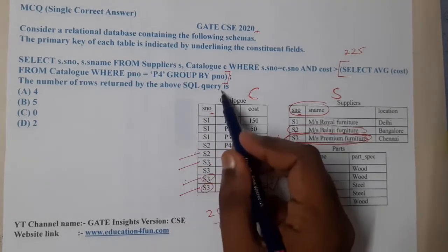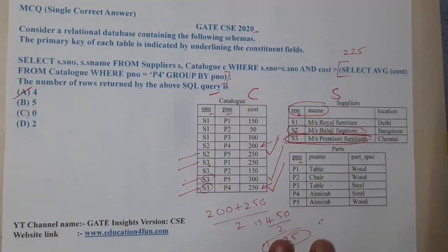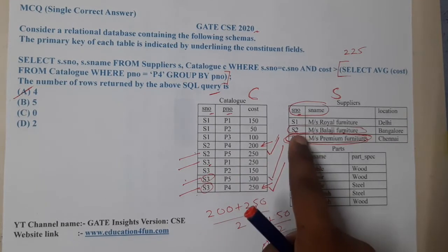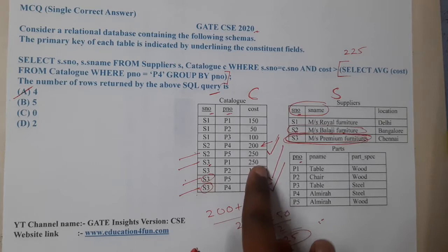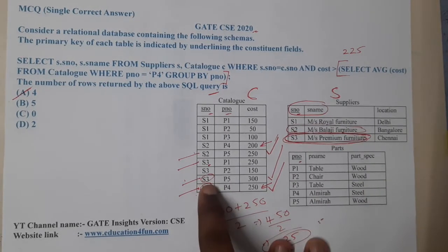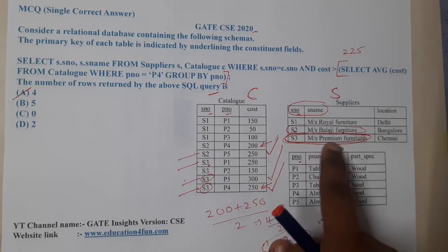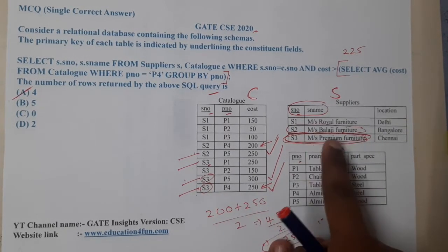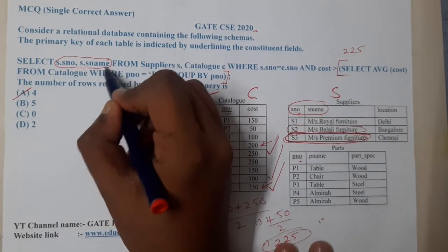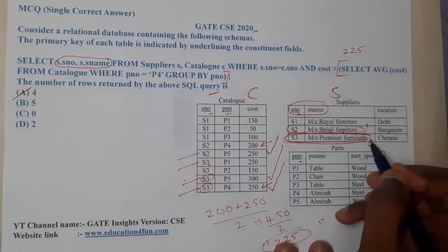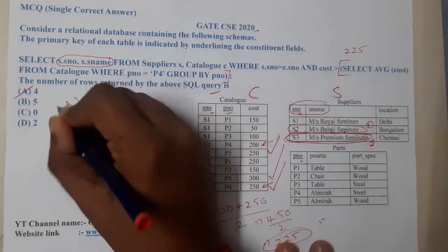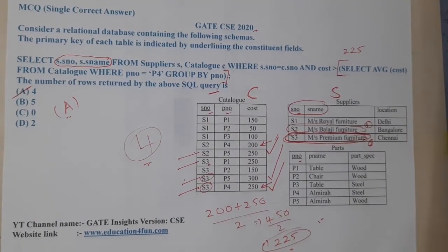The question asks how many rows will be printed — the answer is four. The full rows are: S2, P5, 250, Miss Bajaj, Bangalore; S3, P1, 250, Miss Premium Furniture, Chennai; S3, P5, 300, Miss Premium Furniture, Chennai; S3, P4, 250, Miss Premium Furniture, Chennai. Since we are selecting only s_name and s_number, S2 prints once and S3 prints three times. In SQL, duplicates are allowed, so the answer is four.